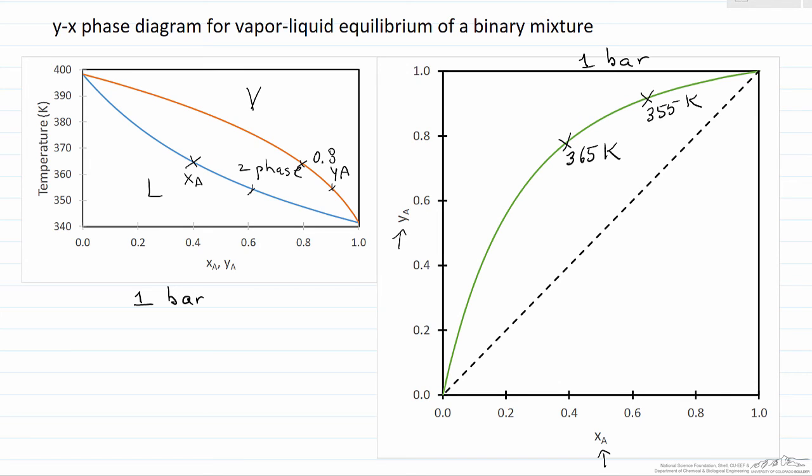The other thing on this diagram that we use in separations is the xa equals ya line, a 45 degree line, that helps us in making representations of behavior. We'll look at that in a separate screencast.